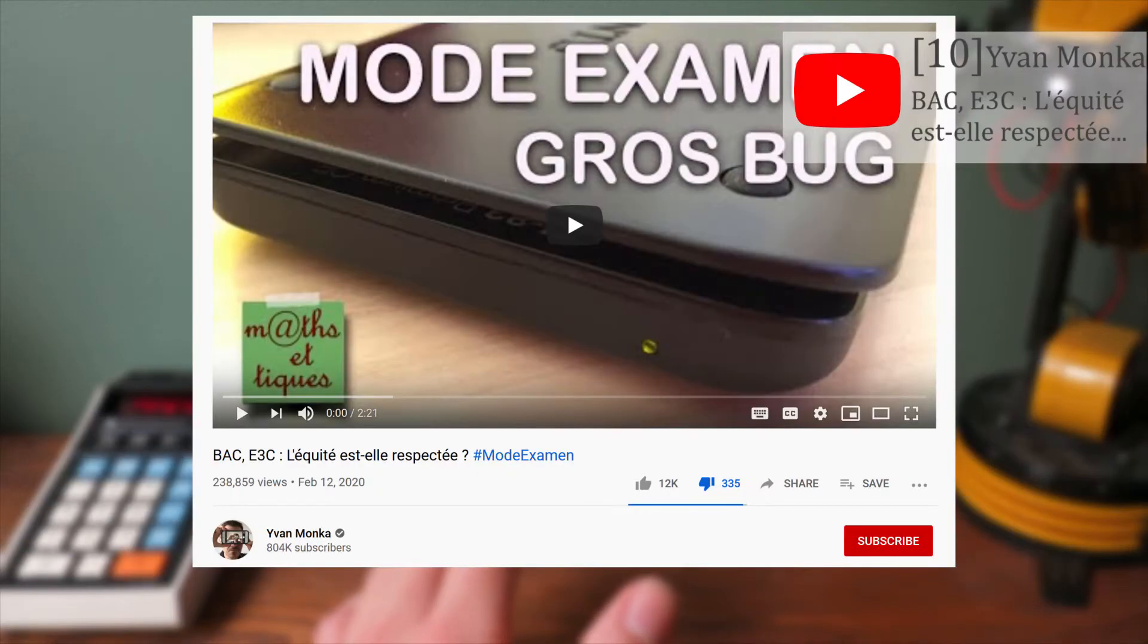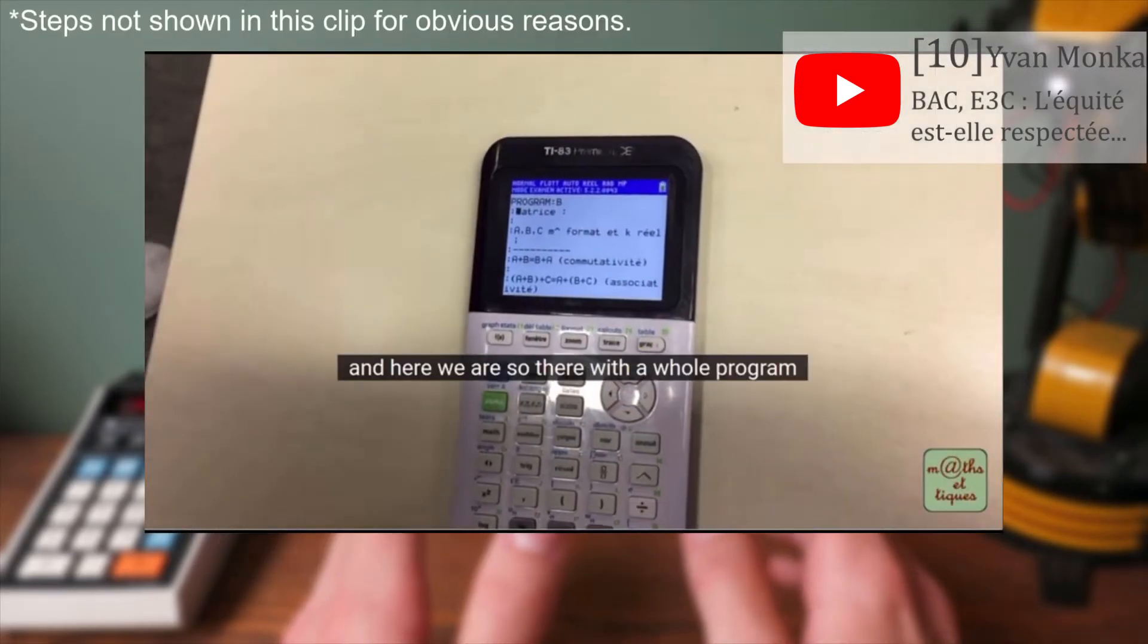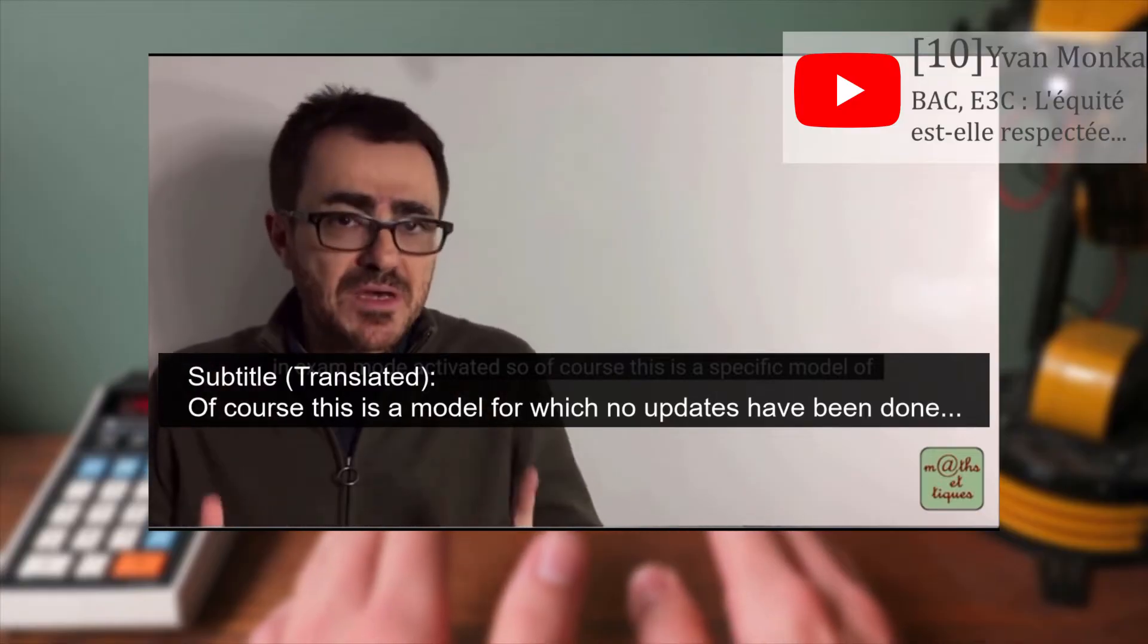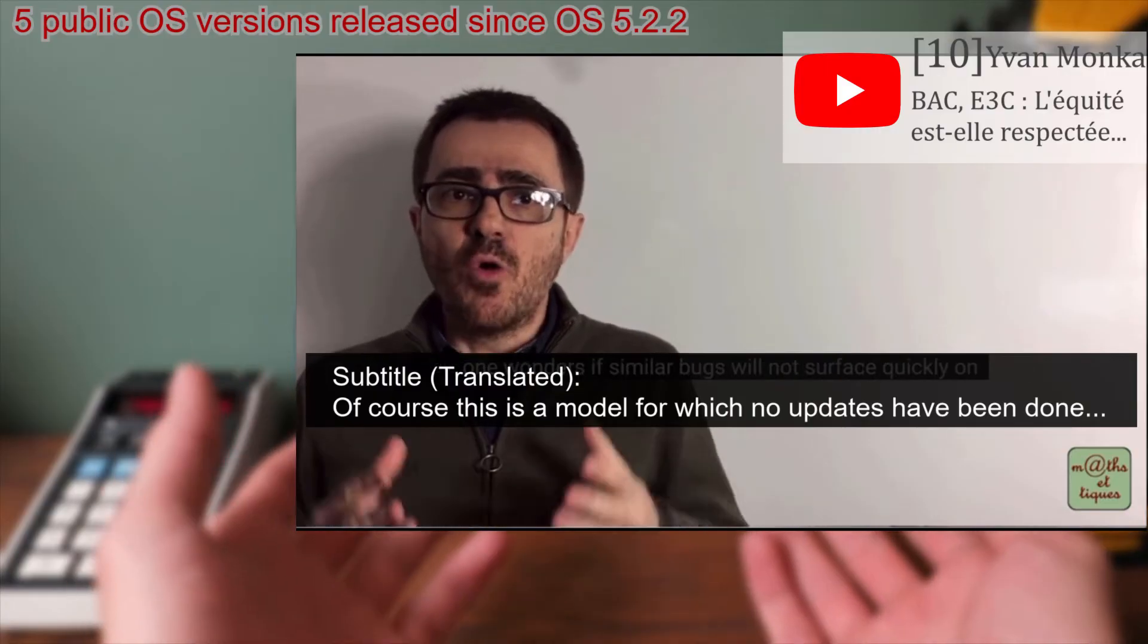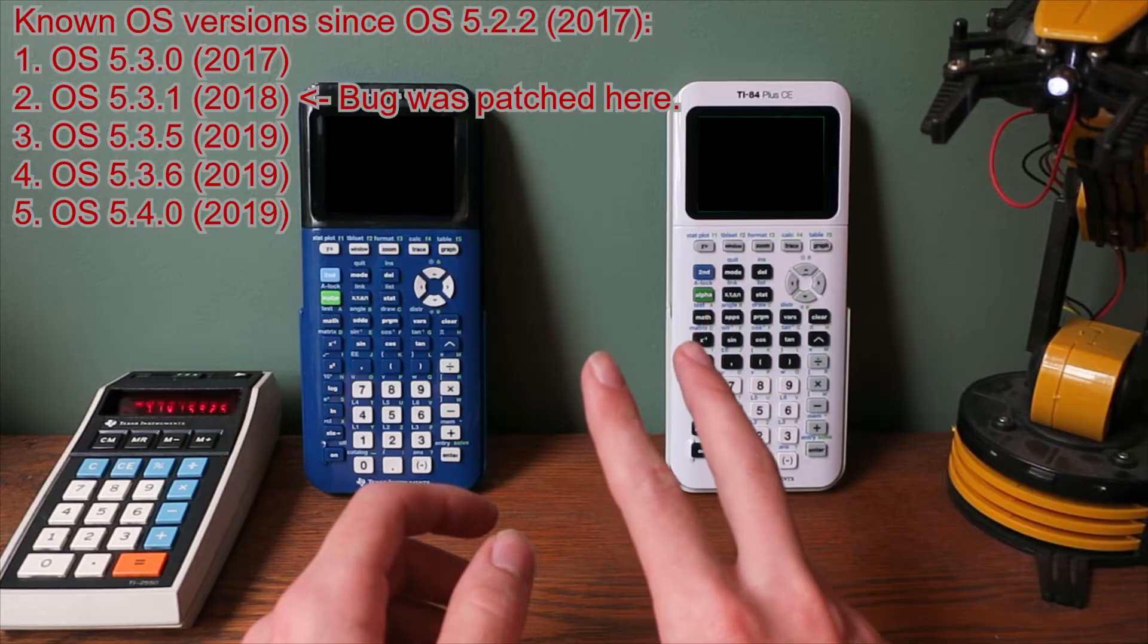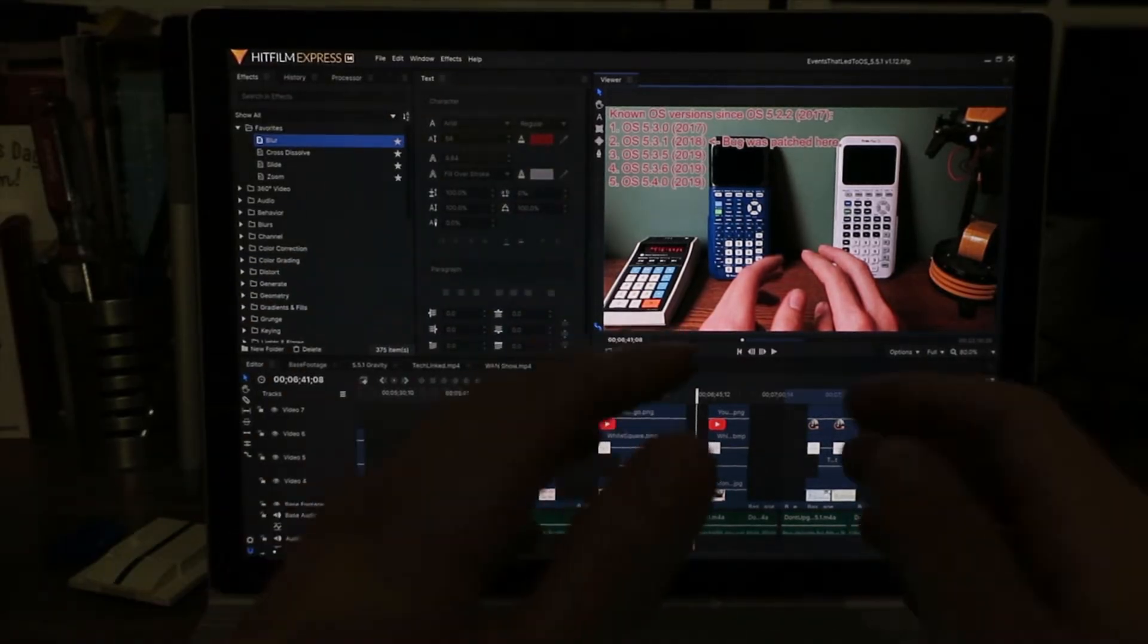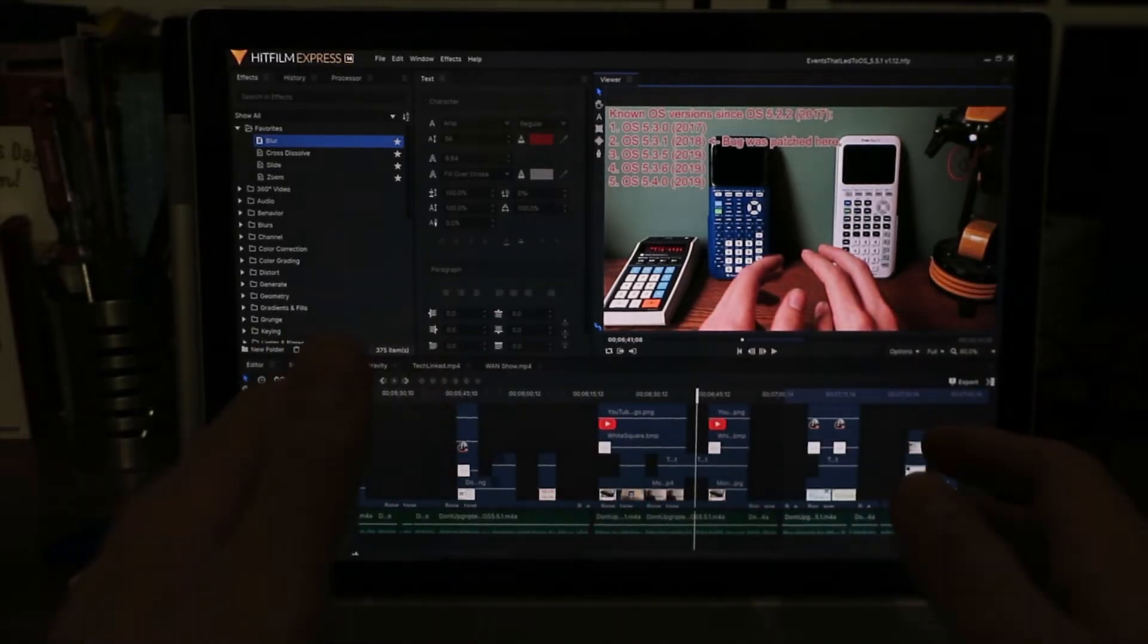In February, a highly misleading video was posted by a student and a famous YouTuber math teacher that showed a step-by-step process on how to exploit the exam mode bug in OS 5.2.2. They falsely stated that no new OSes had been released, making people believe that all CEs were vulnerable to the bug and were unsafe for testing environments even though the bug had actually been patched for over two years. Quick update here, his wording was a little ambiguous. He could have meant that only his calculator was outdated, not that there were no new OSes released. Nevertheless, it does not excuse the panic it ended up causing.